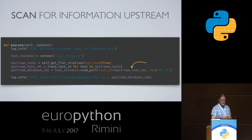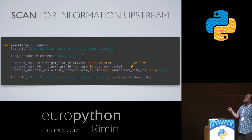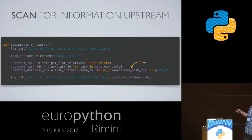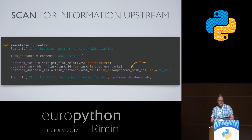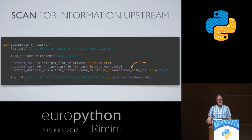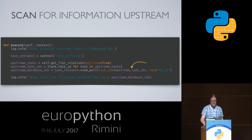You can also scan all upstream tasks using something like this code example, which has these three lines in the middle. I get all the upstream tasks from the graph, then I call XCOM pull on all the IDs of the upstream tasks, querying all upstream tasks for a specific piece of information. I get an array of all the defined database IDs, for example.